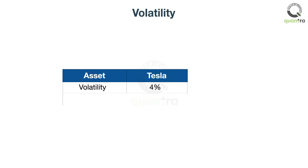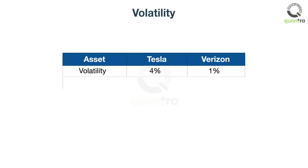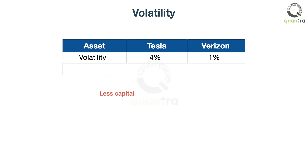Similarly, he calculated the volatility of Verizon, and it came out as 1%. Mary had said you should allocate less capital to more volatile stocks and more to low volatile stocks.